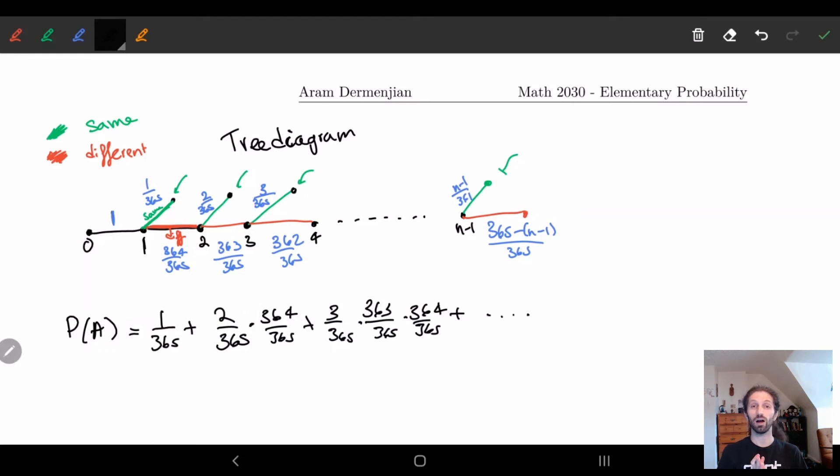This is where probability kicks in and they say: you're trying to calculate the probability of A, why don't you just try to calculate the opposite?